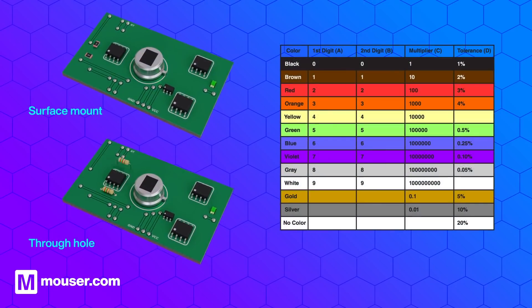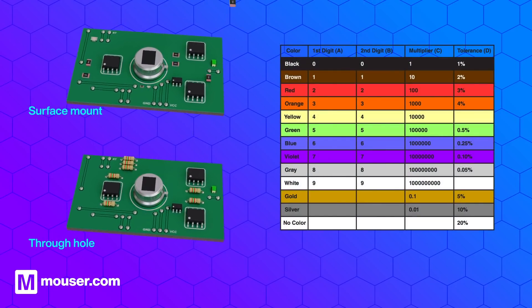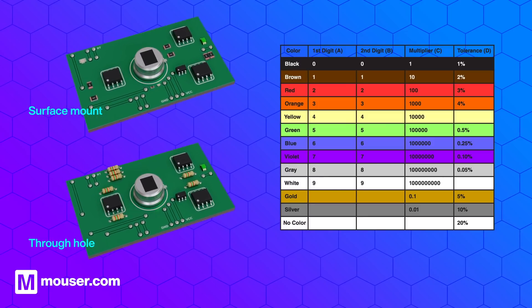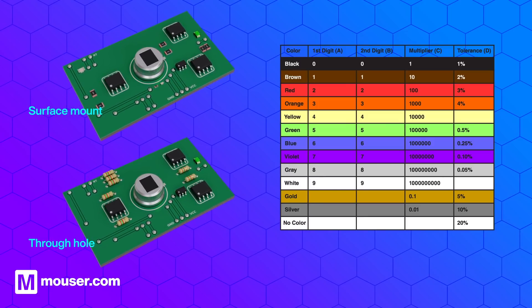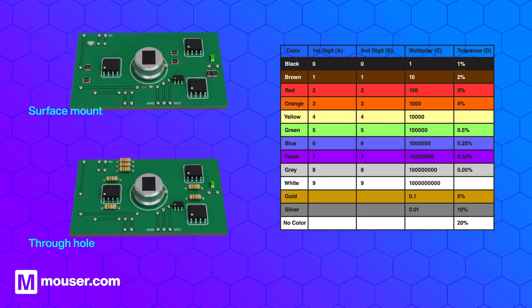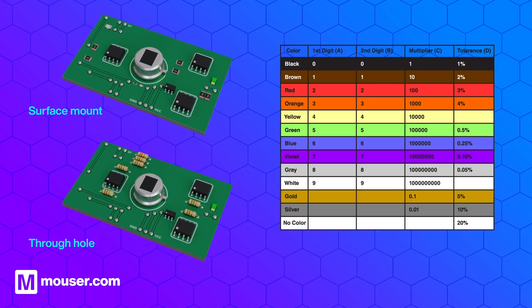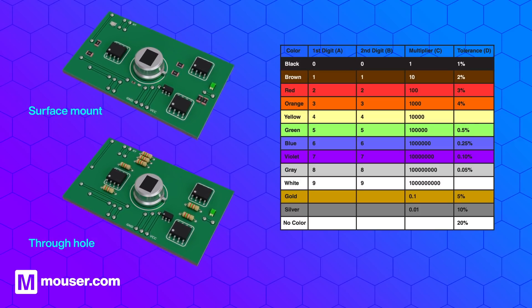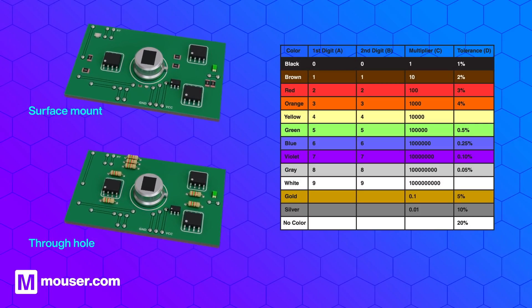Resistors come in all shapes and sizes, most commonly through-hole and surface mount. Through-hole resistors are color-coded to help identify the resistance value and percentage tolerance. Both types come in a range of standard resistance values and tolerances.